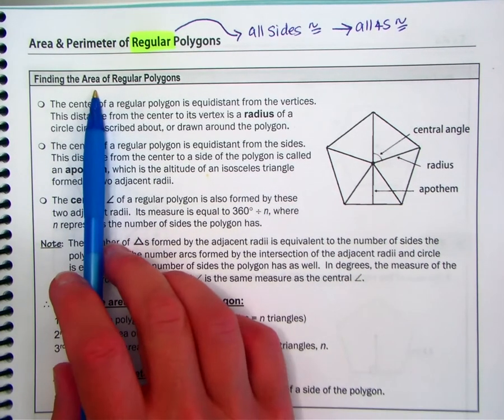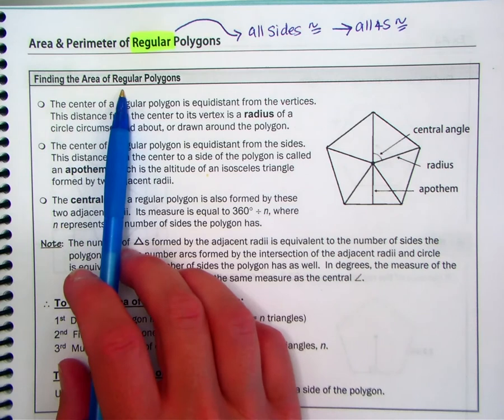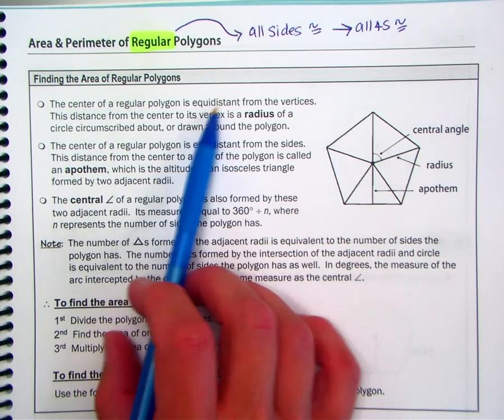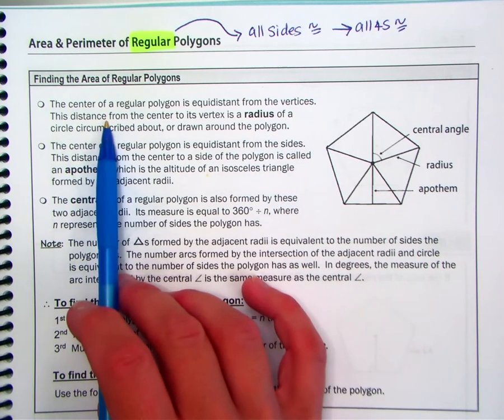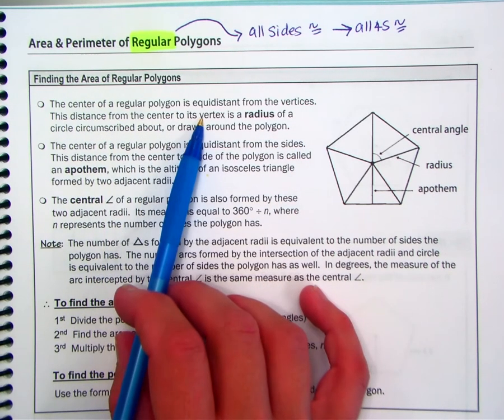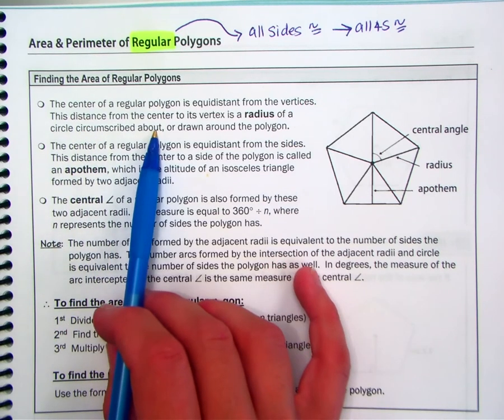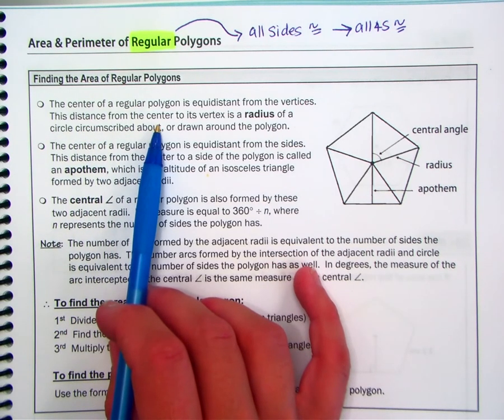So finding the area, we're going to start with the area of regular polygons. It says that the center of a regular polygon is equidistant from the vertices. This distance from the center to its vertex is a radius of a circle circumscribed about or drawn about the polygon.